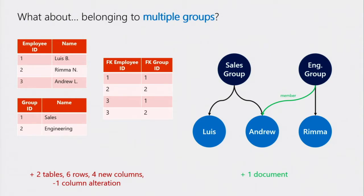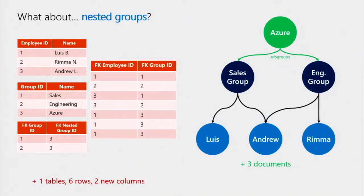How about complicating it a little more — what about nested groups, groups of groups? For example, a sales group in Azure and an engineering group in Azure. In a graph database, you just define a new object and two relationships to the other objects. The semantic value comes as you query the database. But in a relational space, you'd have to define a table containing groups of groups. To query 'get me everyone in Azure,' you'd first retrieve the super group and which groups are under it, then join that to the relationship between groups and employees, then join that to the employees table. In total, this represents a change of three documents on the graph side, or another table, six rows, and two new columns on the relational side.